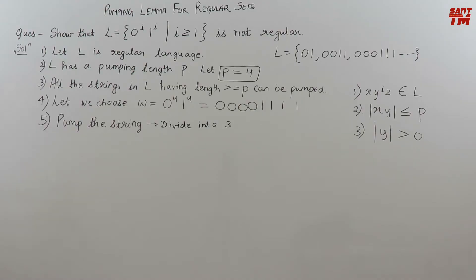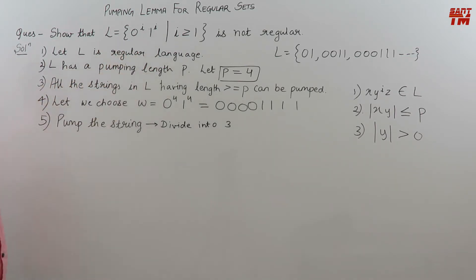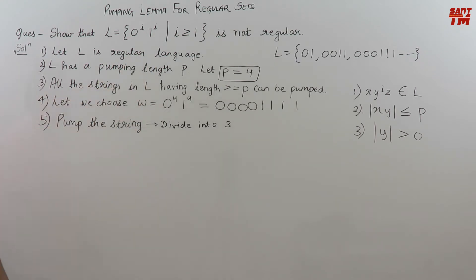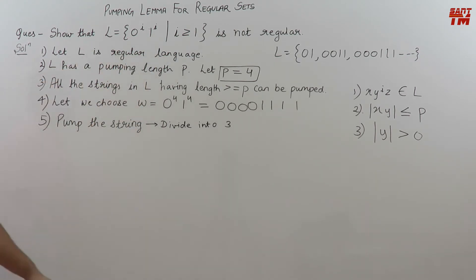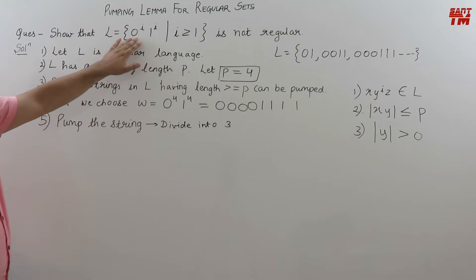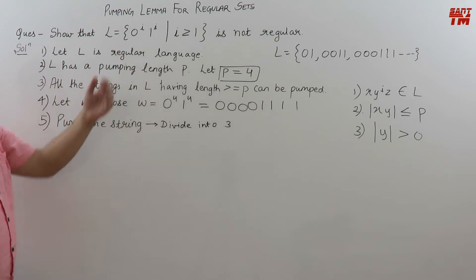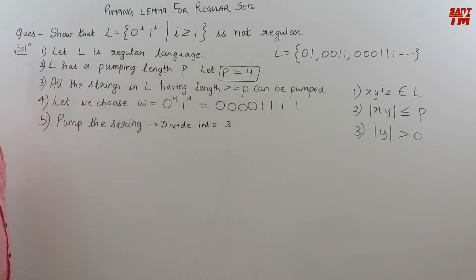Consider this example: the language given to us is 0 raised to the power i, 1 raised to the power i, such that i should be greater than or equal to 1. We have to prove this language to be not regular using the pumping lemma. First of all, understand the language. This language is of the form such that the number of zeros should be equal to the number of ones, and all the zeros should precede the ones.